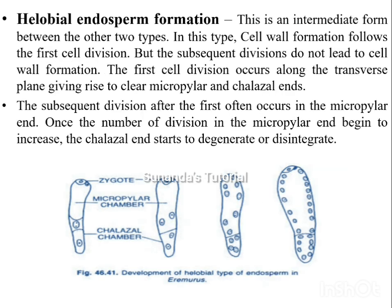Helobial endosperm is an intermediate type between cellular and nuclear. Cell wall formation follows after the first division, but subsequent divisions do not lead to cell wall formation. The first cell division occurs along the transverse plane, giving rise to a micropylar cell and a chalazal cell. Subsequent divisions occur mainly at the micropylar end, and as divisions at the micropylar end increase, the chalazal end starts to degenerate. This type of endosperm formation generally occurs in monocots.